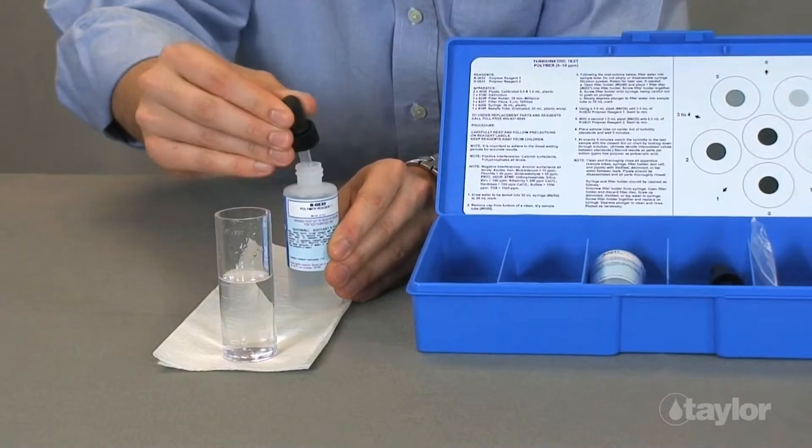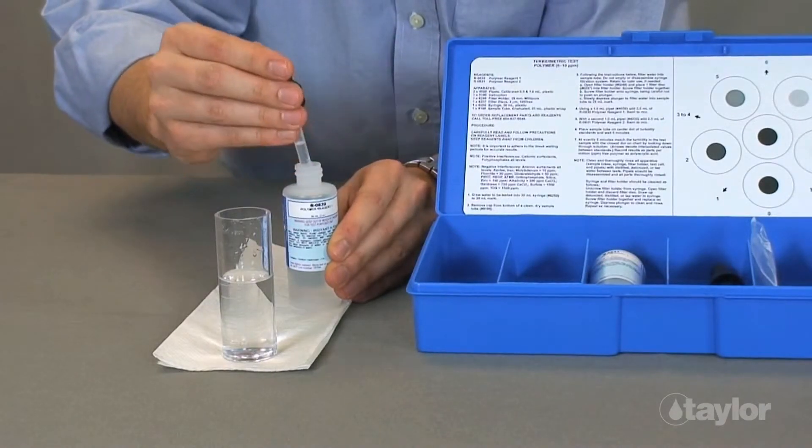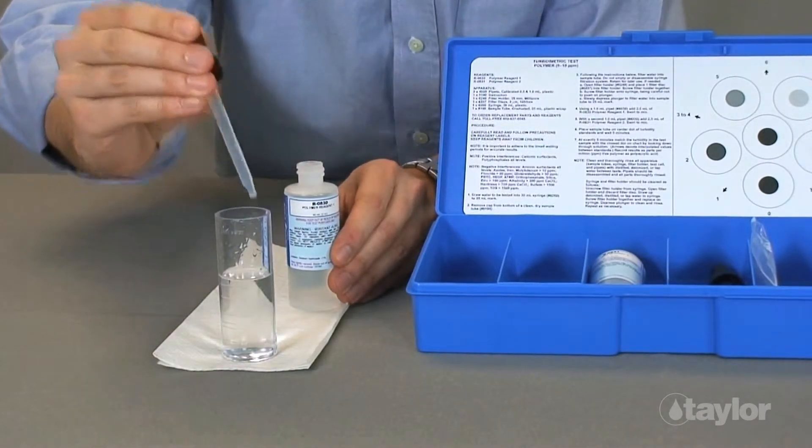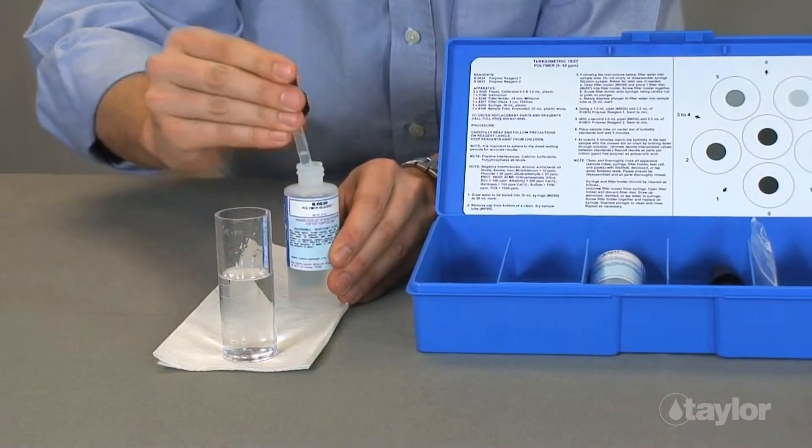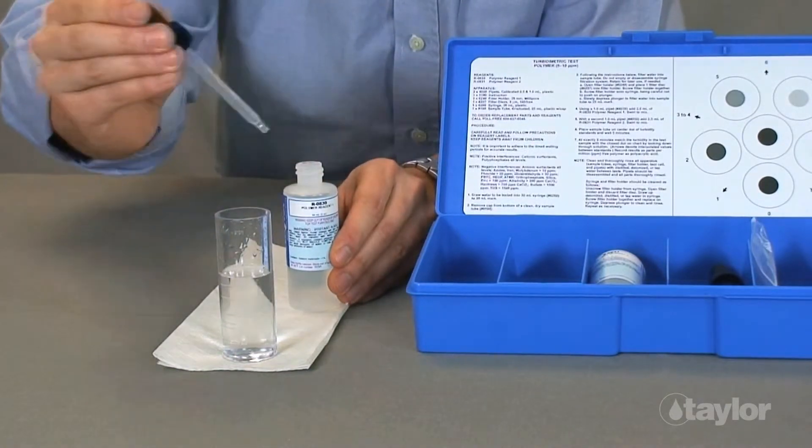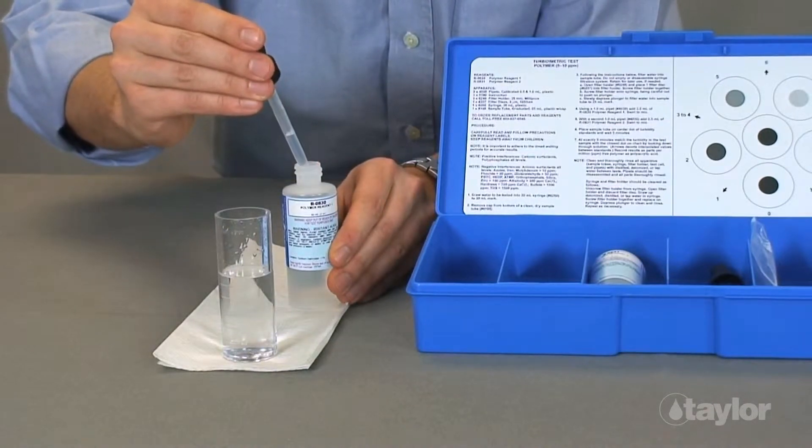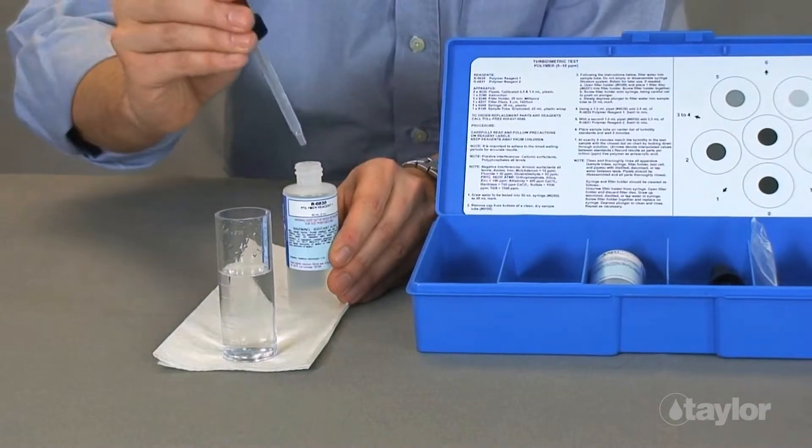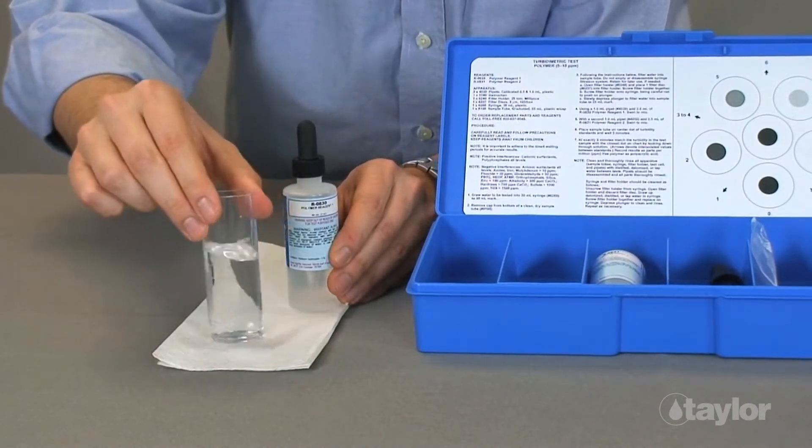Use a 1 milliliter pipette and add 2.5 milliliters of R0830 polymer agent. Swirl to mix well.